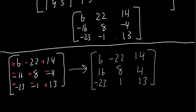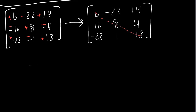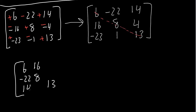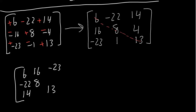We're still not there yet — there's another rule. We draw a diagonal line and do some flipping. The diagonal values 6, 8, 13 remain the same. Then 16 and negative 22 get flipped: negative 22 goes here, 16 goes there. This diagonal flips too: 14 goes here and negative 23 goes there. Finally, 4 and 1 are swapped. So the diagonal remained the same; 16 and negative 22 flipped; 14 and negative 23 flipped; and 4 and 1 flipped.